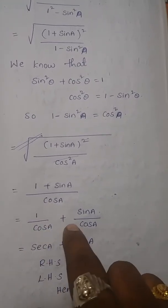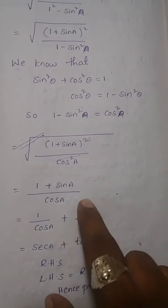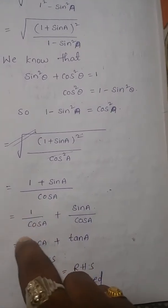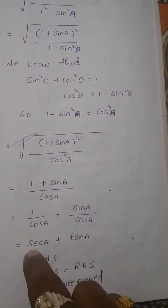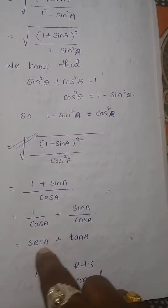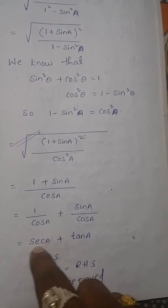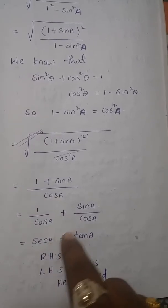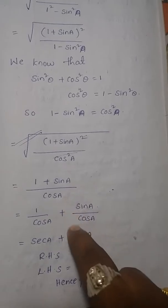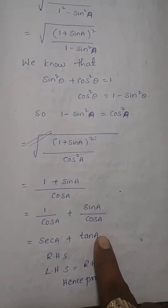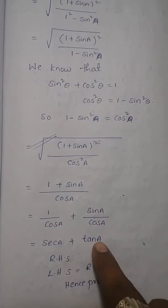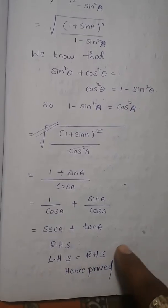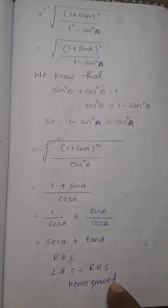Now write separately: 1/cosA + sinA/cosA. We know 1/cosA is nothing but secA, and sinA/cosA is nothing but tanA. So this equals secA + tanA, which is the required RHS. Therefore LHS equals RHS, hence proved.